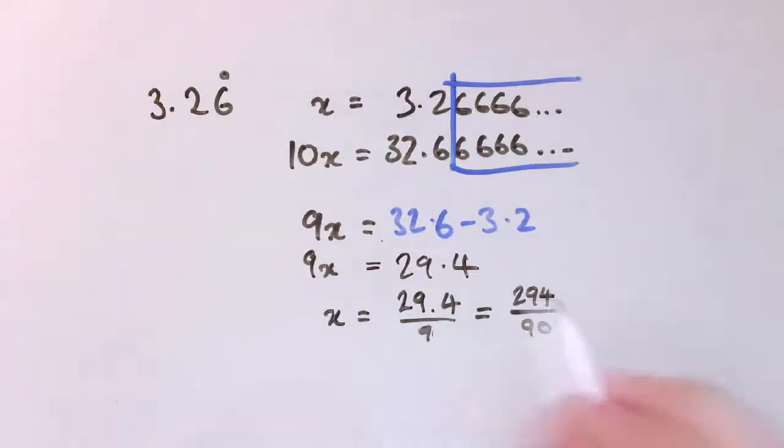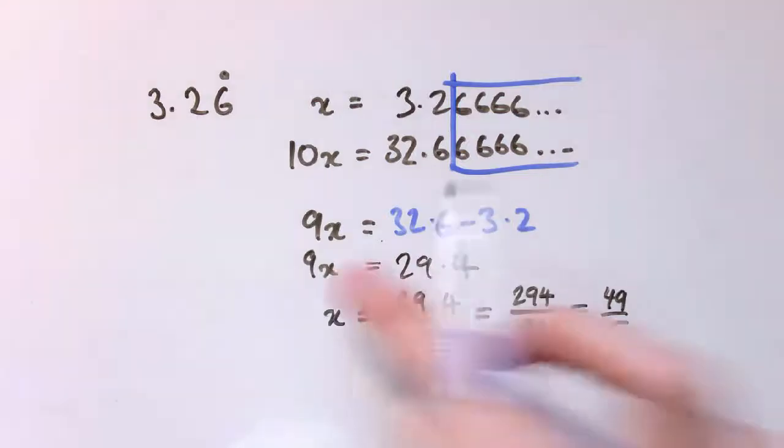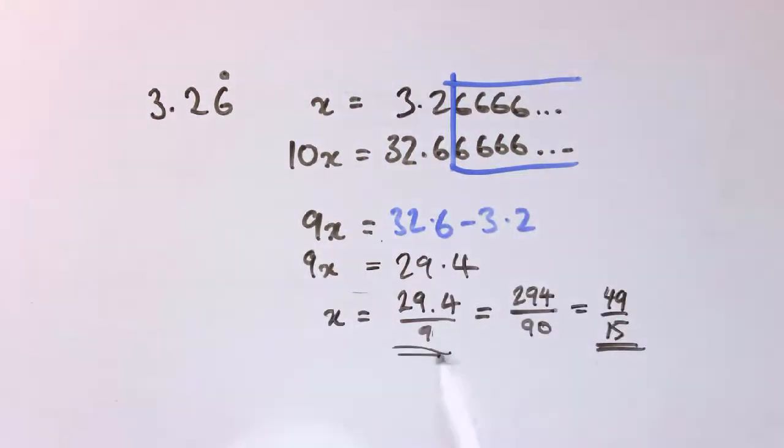Now we should simplify this fraction down if we can. You can divide top and bottom by 6 to get 49 over 15. It's a slightly harder example because of the way the numbers came up, but in principle we do just the same thing: multiply it by 10, subtract one from the other and sort out this equation.